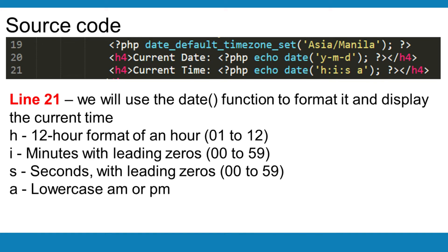Line 21: we will use the date function to format and display the current time. H — 12-hour format of an hour, 01 to 12. I — minutes with leading zeros, 00 to 59. S — seconds with leading zeros, 00 to 59. A — lowercase am or pm.